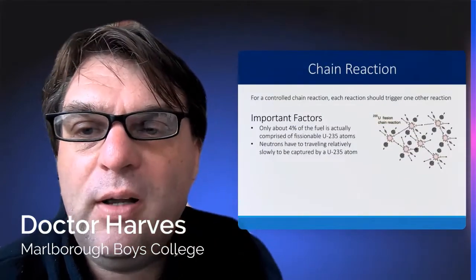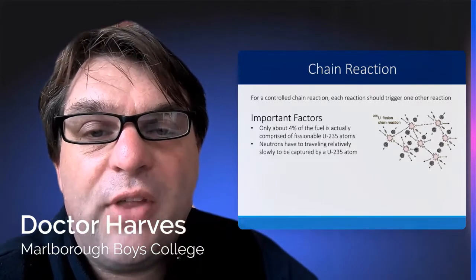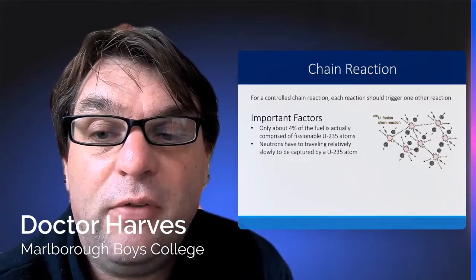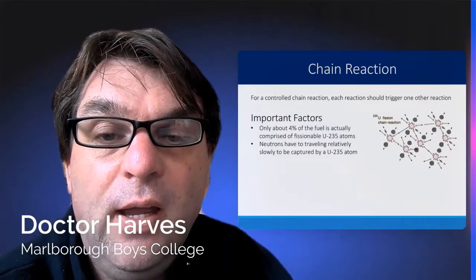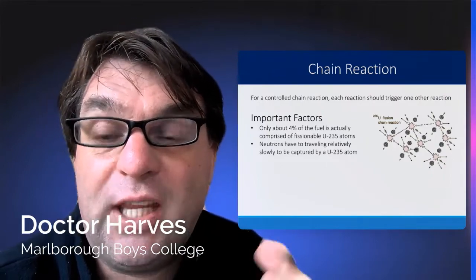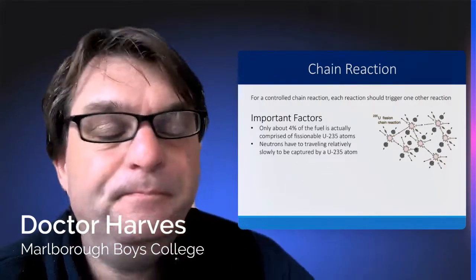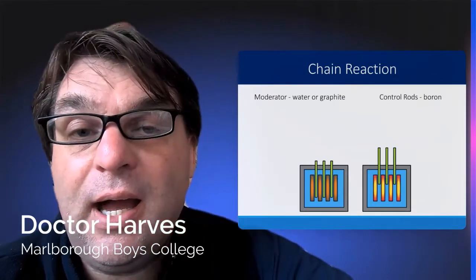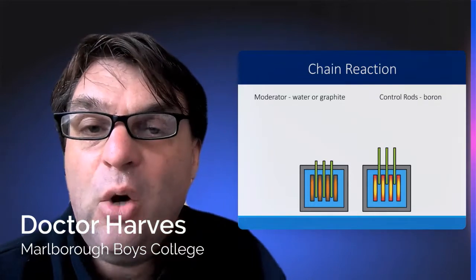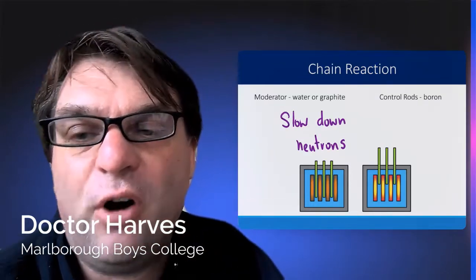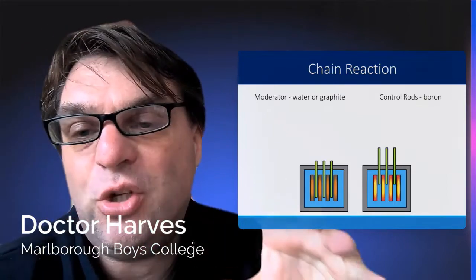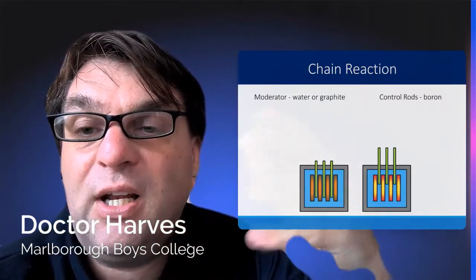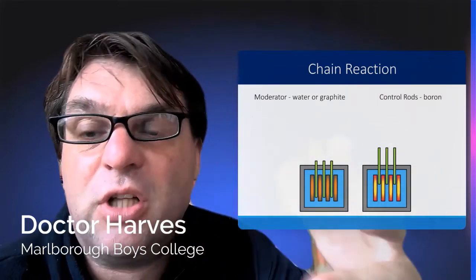However, if not controlled, you end up with a chain reaction — which we don't want. One reason the chain reaction stays manageable is that only about 4% of the fuel rods is actually Uranium-235, and neutrons are slowed down by the water so they can be captured by Uranium-235 atoms. Two additional kinds of rods are incorporated into the reactor: moderator rods, which are either water or graphite, slow down the reaction. The Chernobyl incident occurred because, although there were many moderator rods, the reaction went critical and couldn't be slowed down sufficiently.